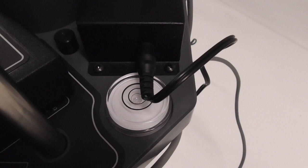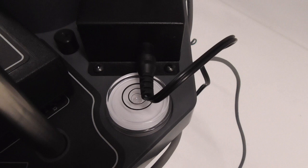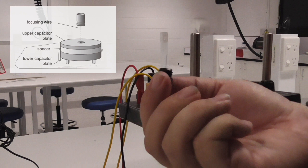Now we can see where we can get the focusing wire. The next step is to insert the focusing wire into the hole in the center of the upper capacitor plate.